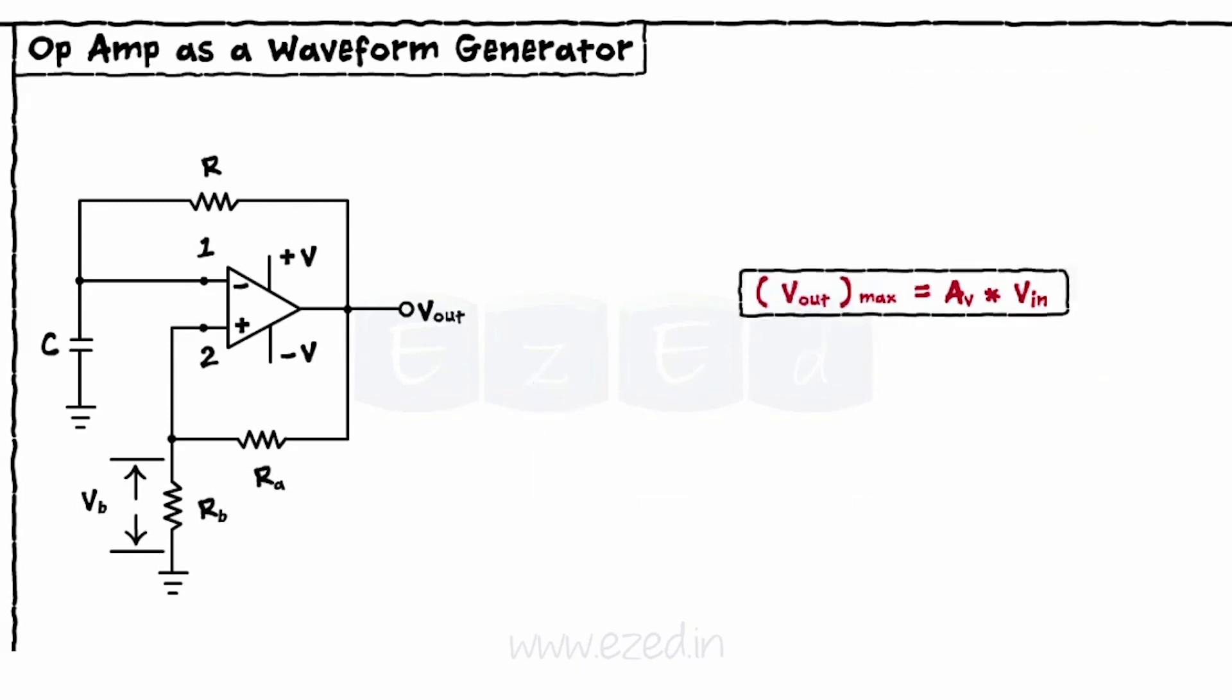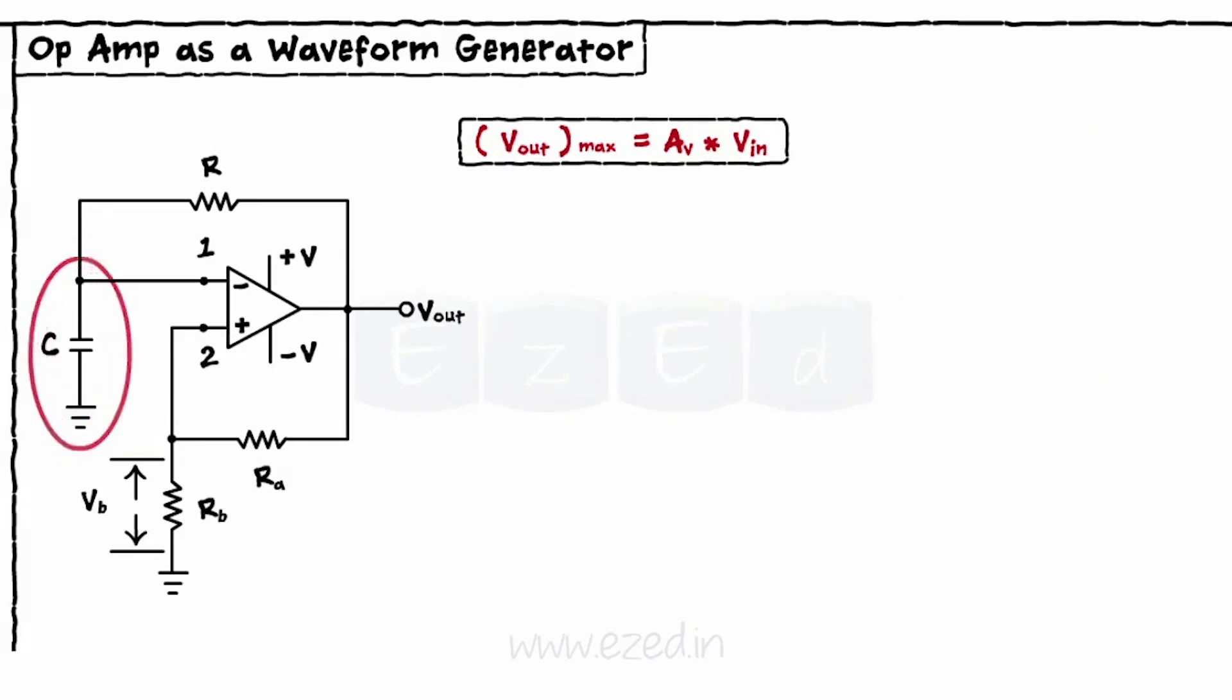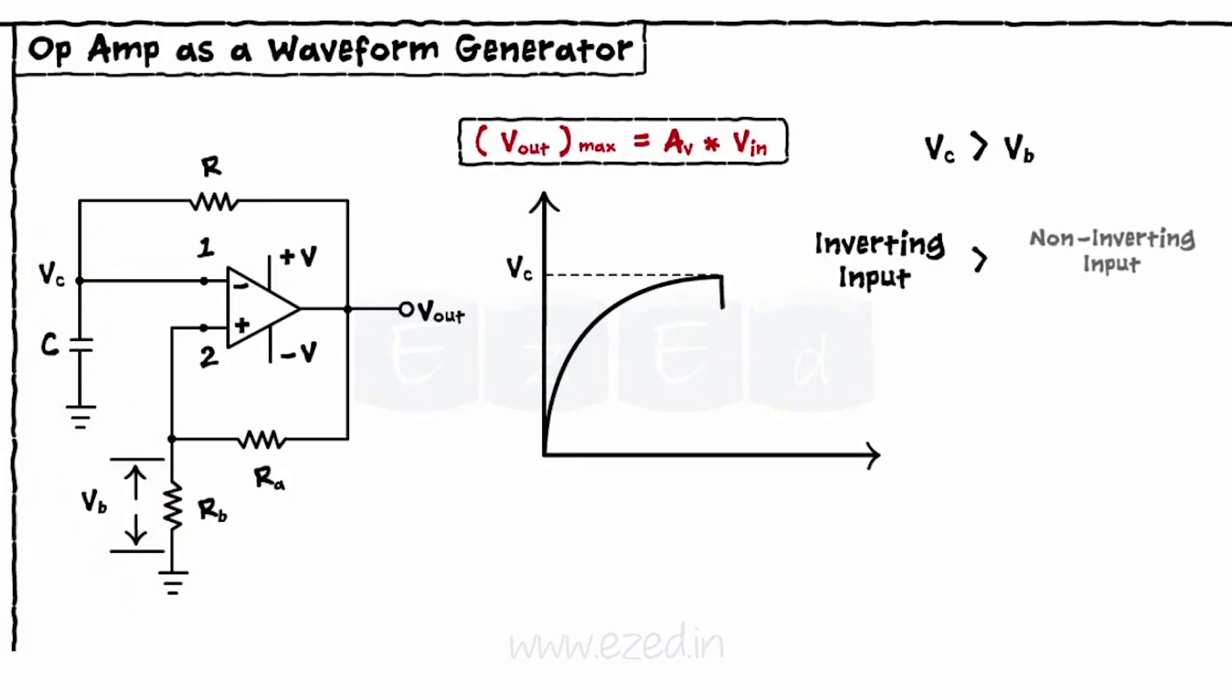As we have a non-zero input at the inverting terminal now, a capacitor also starts charging. It will charge continuously till its voltage becomes greater than VB. As soon as voltage VC is greater than VB, the inverting input becomes greater than the non-inverting input.